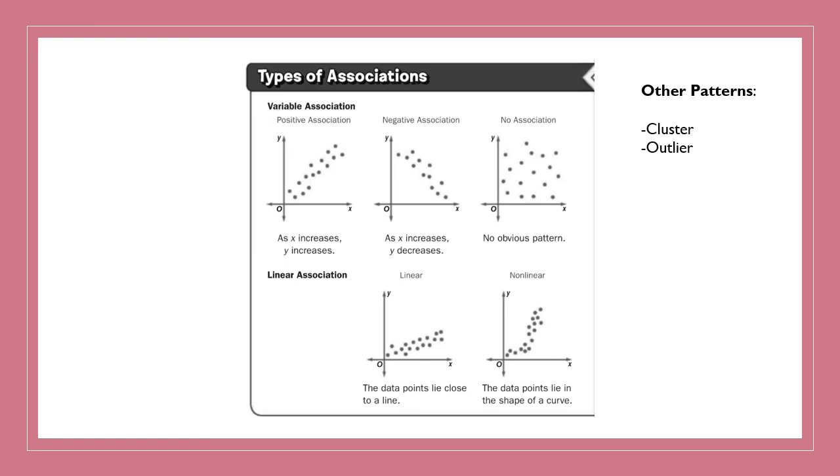Alright, some additional vocab words that we kind of need to look at. Variable association. So first off, you will need to be able to tell me, do you have a positive association? So notice how the points on this graph are going upward. Do you have a negative association where the points on this data are going downward? Or no association where these points are plotted in various different points? There's no association. It's not going up and it's not going down. So there's no pattern.